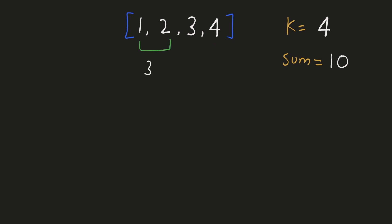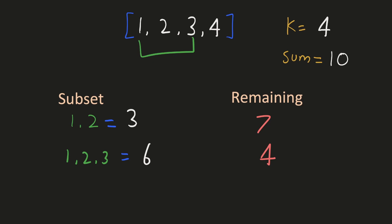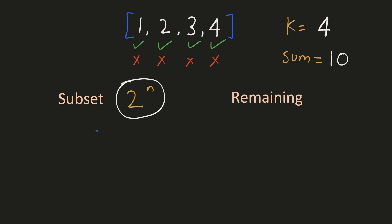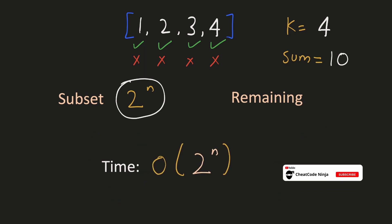We'll just keep track of the first group; the sum of the second group can be derived by subtracting the first group's sum from the total of all numbers. So we have to consider all subsets of this array. For each number in the array, we have two choices — whether to include it in the subset or not — giving 2 raised to the power n total permutations. The time complexity of this brute force would be O(2^n) because we have to consider each and every subset.